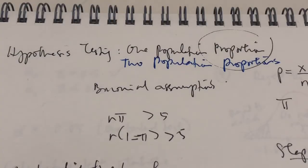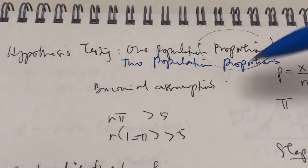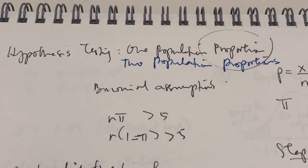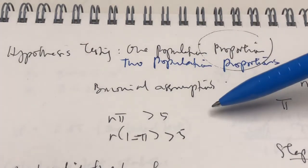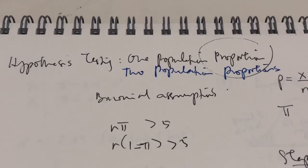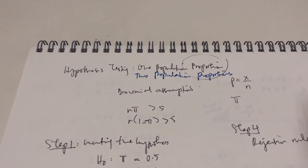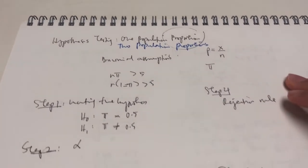Now, just like before, when we want to conduct a hypothesis testing on two population proportions, the same assumption is made. But this time, we need to make sure that both samples are large enough that the normal distribution will serve as a good approximation of the binomial distribution. Now, let's take a look at all of the six steps in conducting our hypothesis testing for two population proportions.